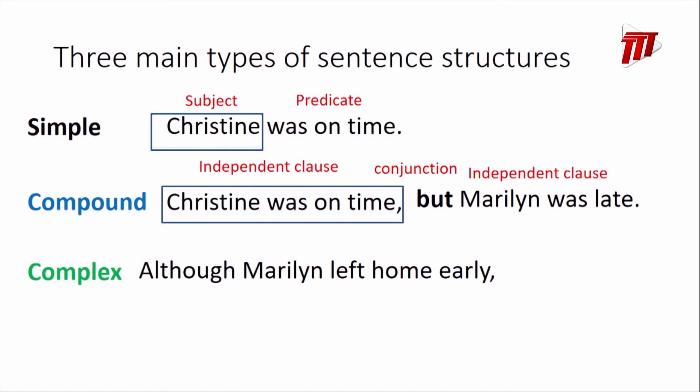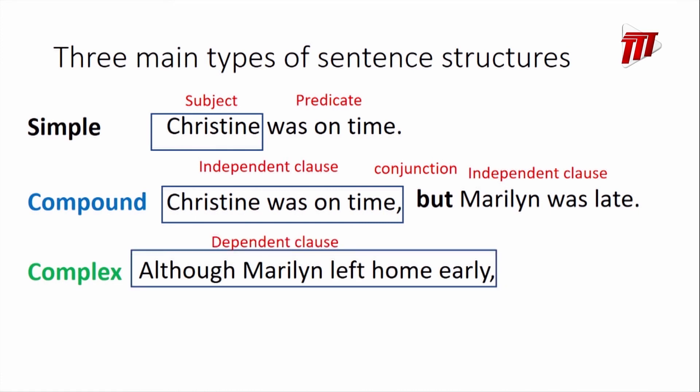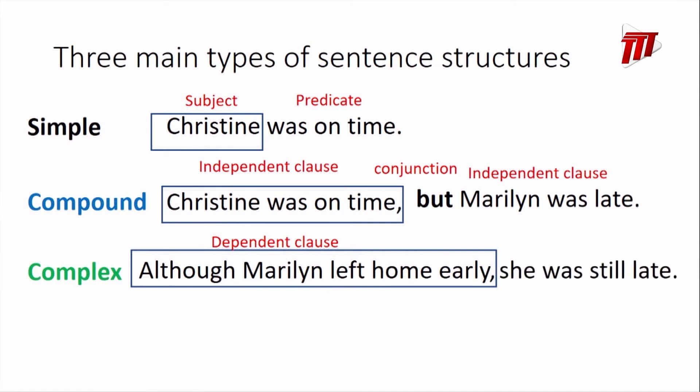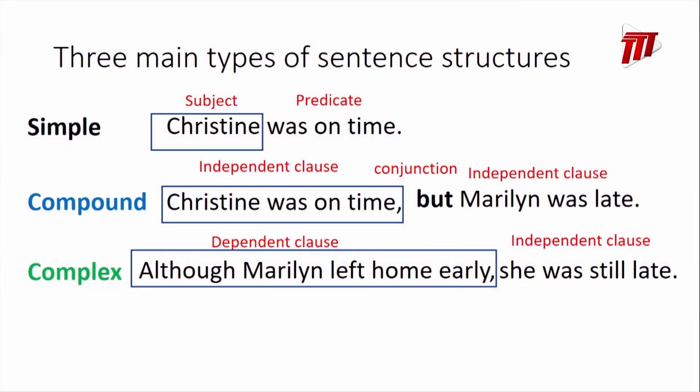Let's get into the complex sentence. 'Although Marilyn left home early' is a dependent clause — it can't stand on its own. If someone just said 'although Marilyn left home early,' you'd want to wait to find out what happened. So: 'Although Marilyn left home early, she was still late.' We have a dependent clause followed by an independent clause. When you learn about sentences in class, it's not just to write sentences — we want to use them effectively in our stories and reports.